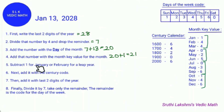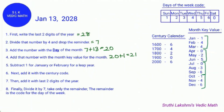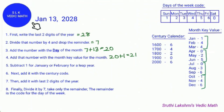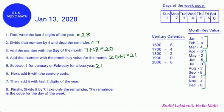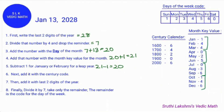It says to subtract 1 for January or February in a leap year. Let's check if 2028 is a leap year — it is, because 2028 is divisible by 4. And since the month is January, we subtract 1 from 21. So 21 minus 1 equals 20. If the year is not a leap year, or if you have a leap year but the month is not January or February, you can skip this step.